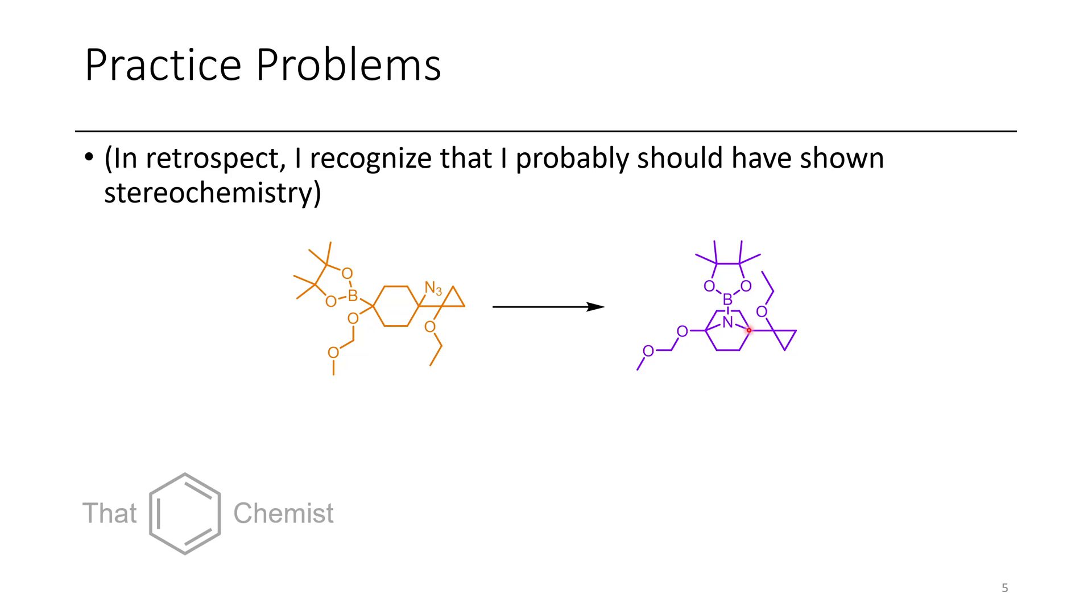Now the other thing is this might be a little bit of a challenging transformation depending on the ring strain, right? If this was in a chair conformer it might be okay but if it was more of like a boat conformer it might be a little bit more challenging to do. So essentially the boron is just going to attack the nitrogen, displacing nitrogen as a leaving group, giving us this N-boron containing product.